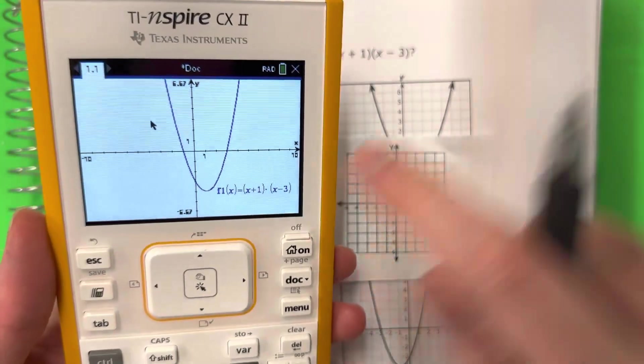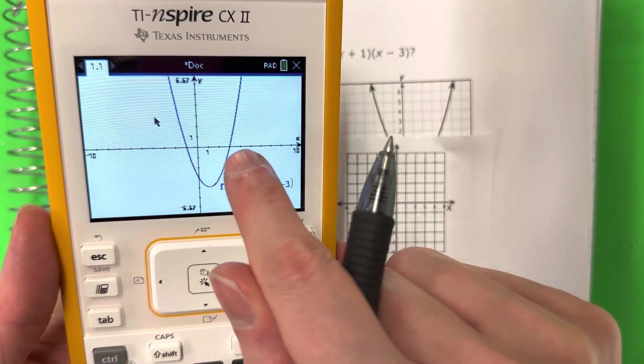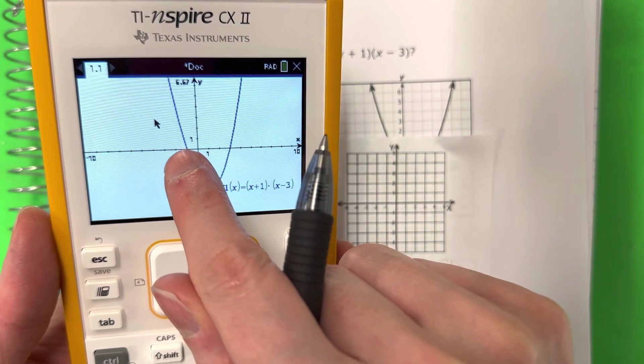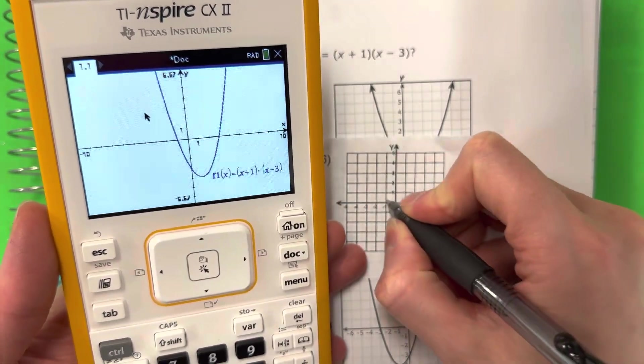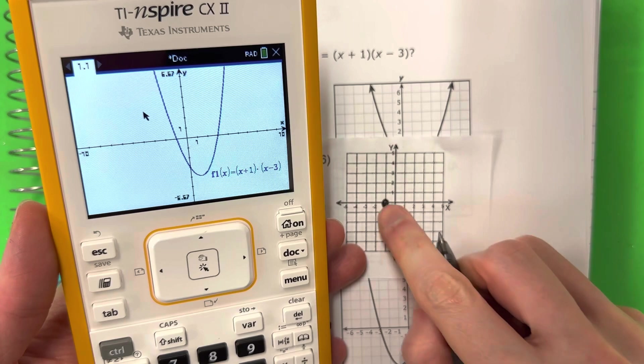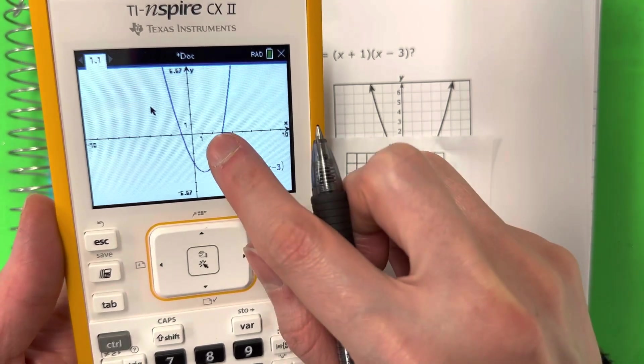I'm going to kind of try to draw it here. So do you see the x-intercepts? It looks like there's an x-intercept here at negative 1. So I'm going to go ahead and put a point here at negative 1. I need a point at negative 1 and the other x-intercept,